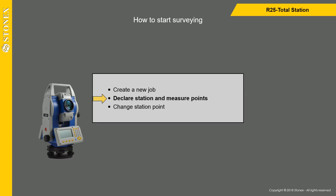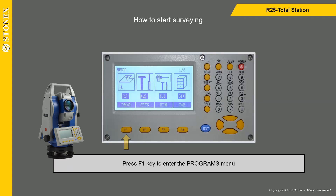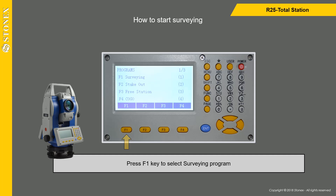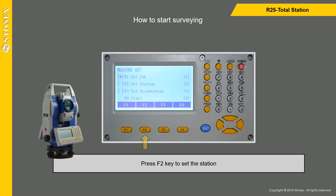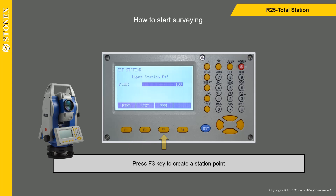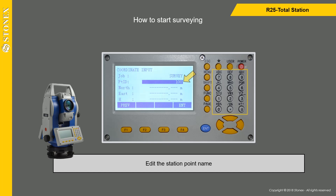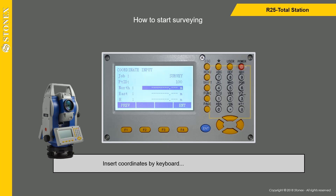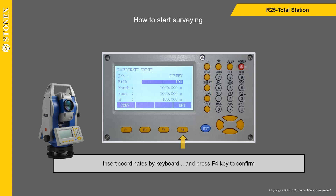To declare station and measure points, press F1 key to enter the programs menu, then press F1 key to select the surveying program. Press F2 key to set the station. Press F3 key to create a station point. Edit the station point name and insert coordinates by keyboard, then press F4 key to confirm.